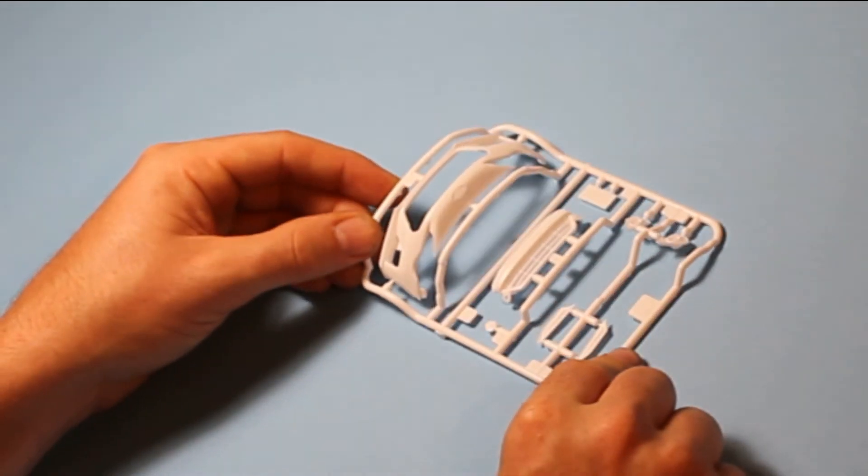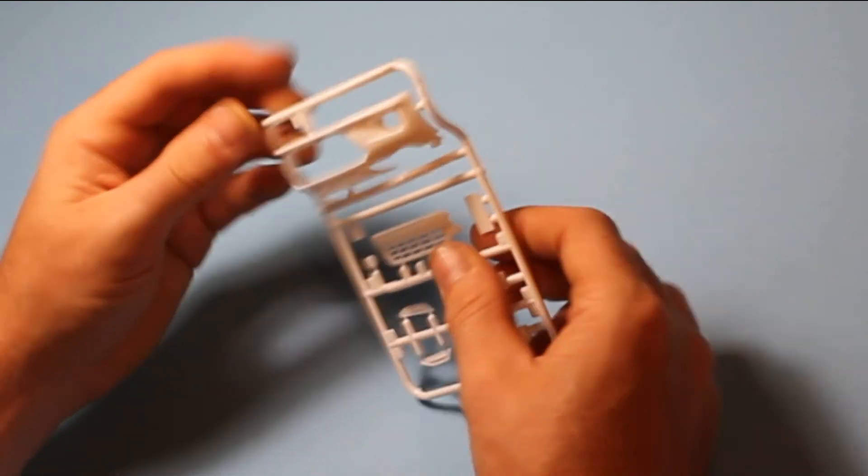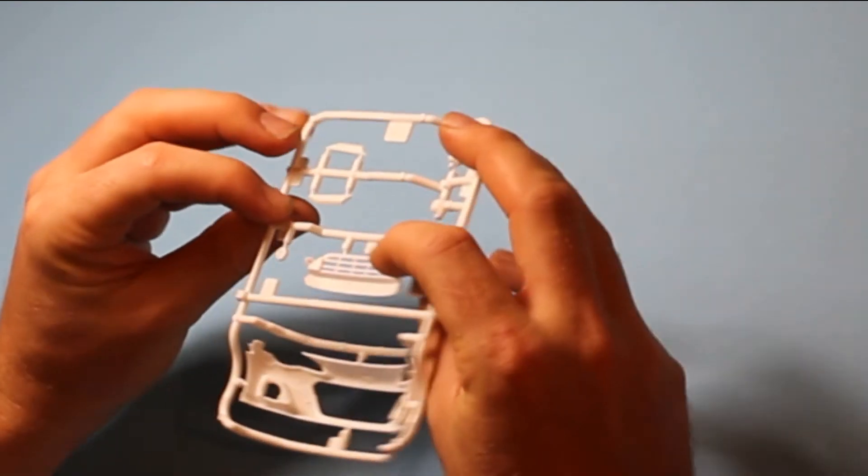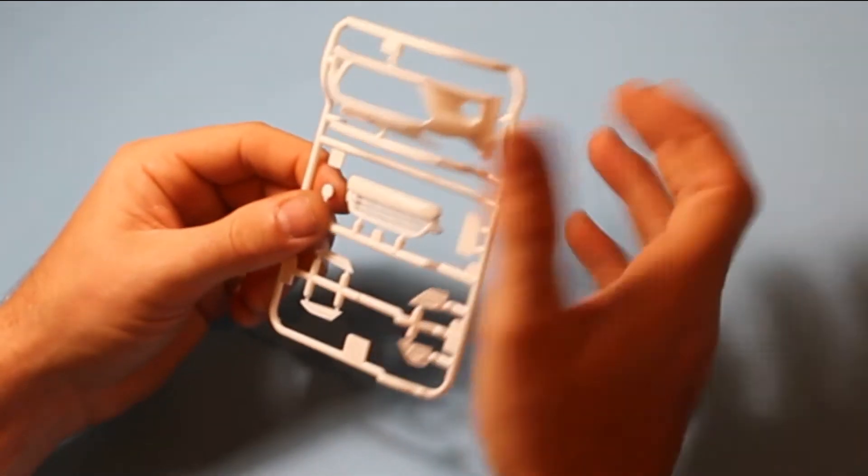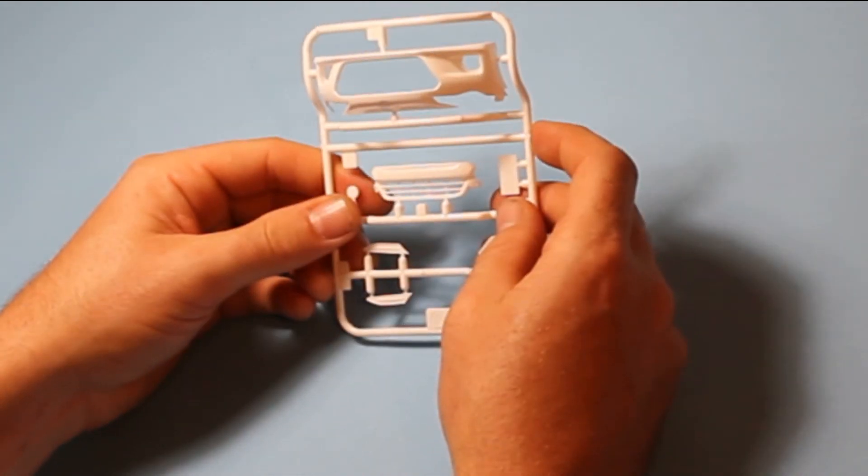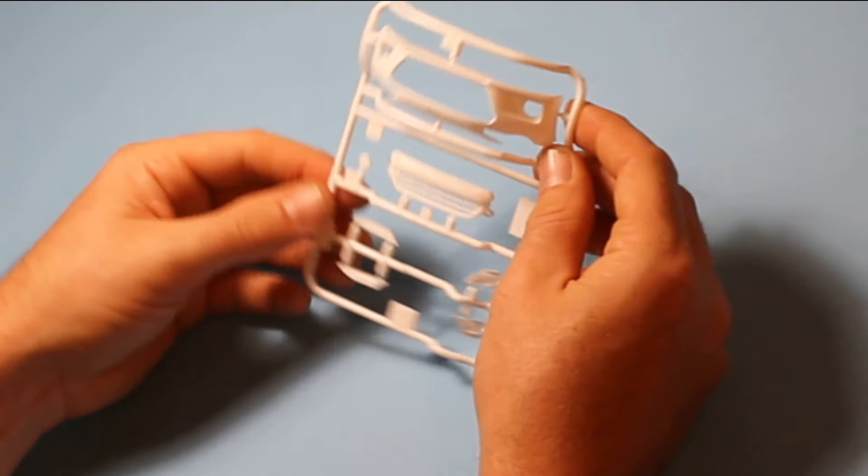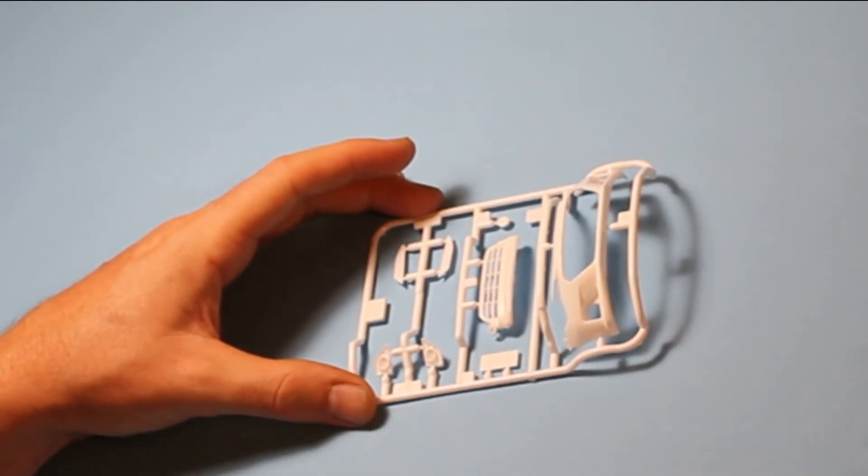Then we've got parts for the front bumper and parts for the grill there, which is placed inside the bumper. So that's very nice again in white plastic and parts for the headlights, for the fog lights.